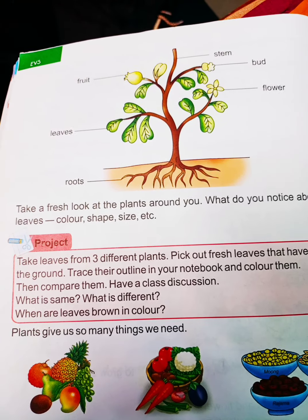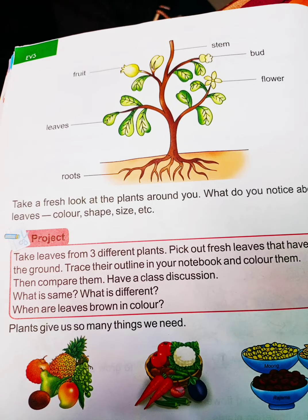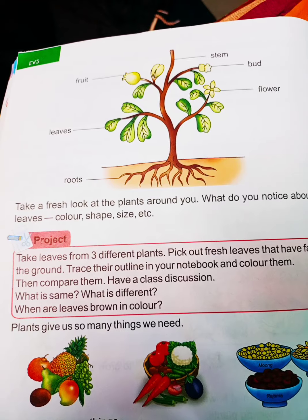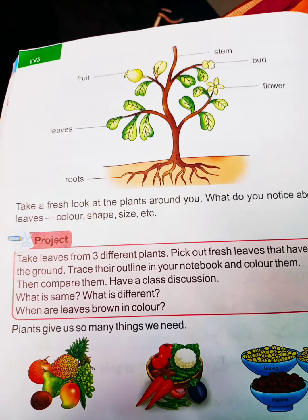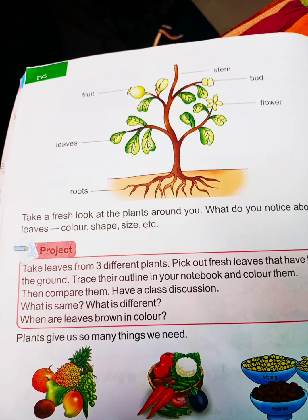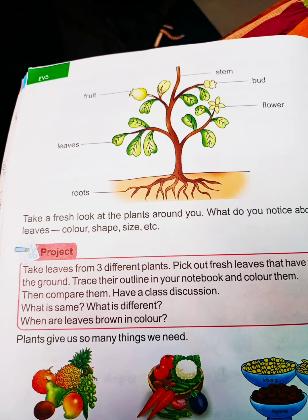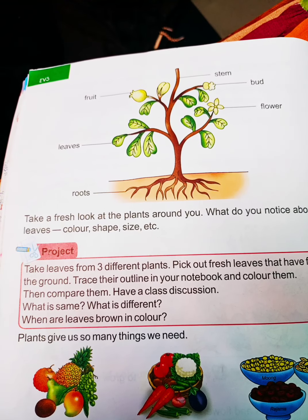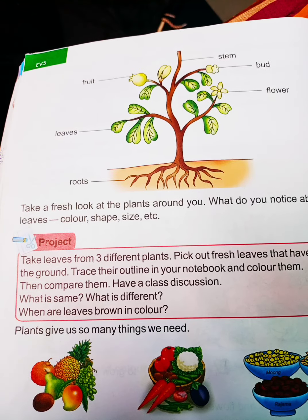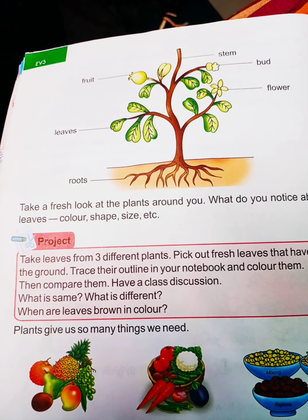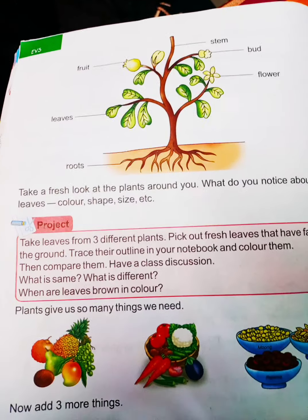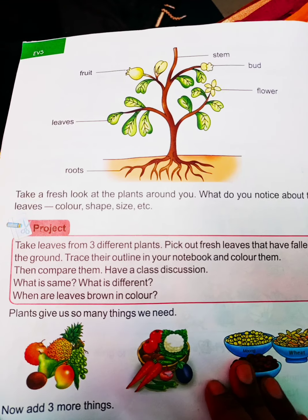This song means that plants and trees need water, sunlight, and air to grow nicely and give beautiful flowers and fruits. We should plant more trees in our surroundings to make the air fresh and clean. Tomorrow we will learn a different topic. Bye children!